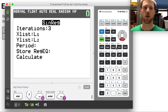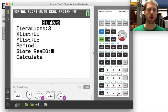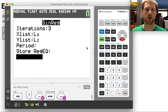I'm going to leave iterations the same. My X list is my L1, my Y list is my L2. You can set the period in here. I'm just going to leave that alone and let it calculate for me. And then I'm going to hit calculate.